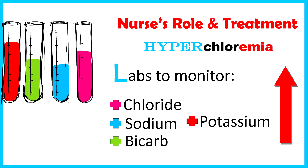L is for labs to monitor. As a nurse, you want to check the chloride level to make sure it's not trending too high and is actually coming down with treatment. Also check the sodium level and the bicarb level — especially if giving fluids to increase bicarb, you want to make sure you're not making the patient too alkaline. Also look at potassium, because they could have hyperkalemia, especially when acidosis is present. When acidosis occurs, potassium leaves the cell and moves into the extracellular area in exchange for hydrogen ions, resulting in an elevated potassium level.